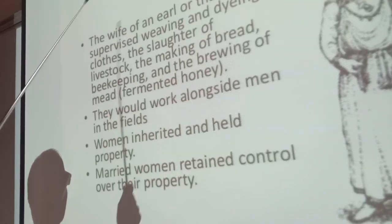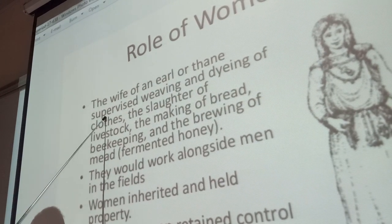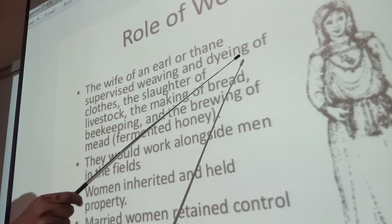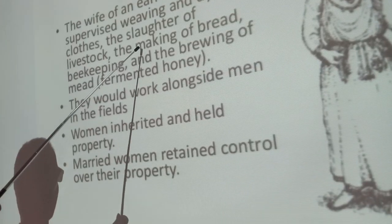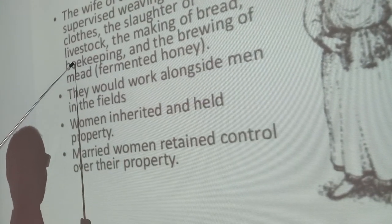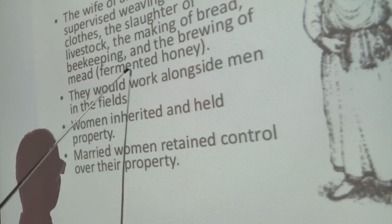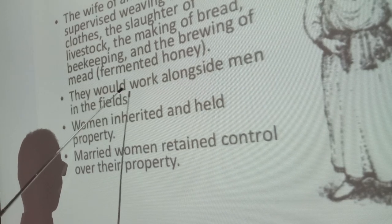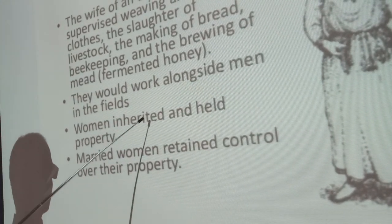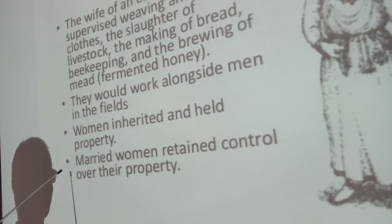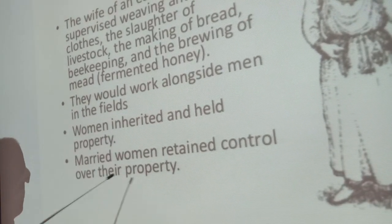The role of women: the wife supervised weaving and dyeing of clothes, the slaughter of livestock, the making of bread, beekeeping, and the brewing of mead — fermented honey. They would work alongside men in the fields. Women also inherited and held property. Married women retained control over their property.